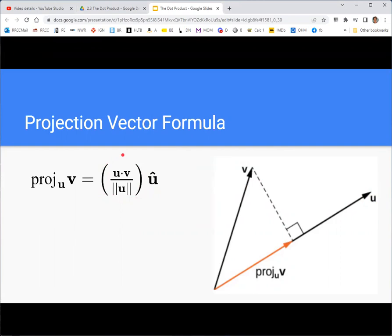Now, this isn't the way the formula is usually presented because the situation usually is that you know the vector v and u. And so you can write u hat in terms of u over magnitude of u. And then you can combine these magnitudes of u and get magnitude of u squared.